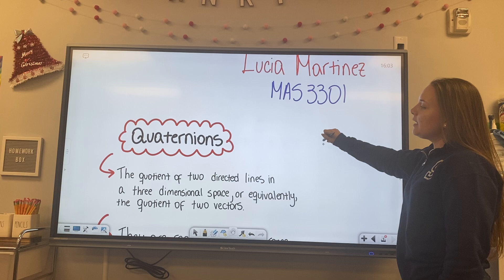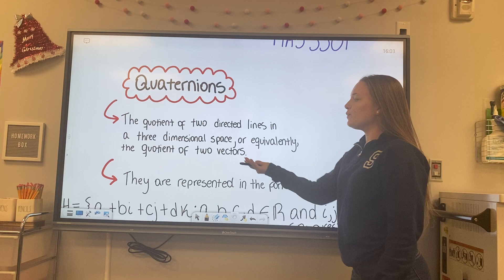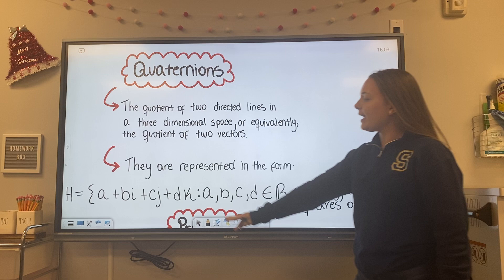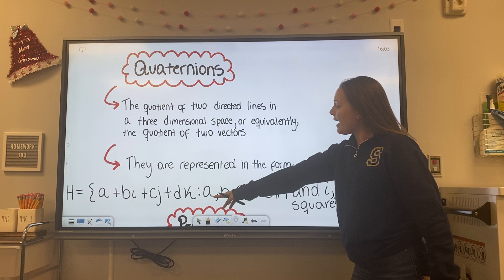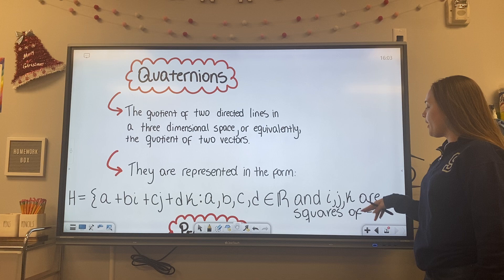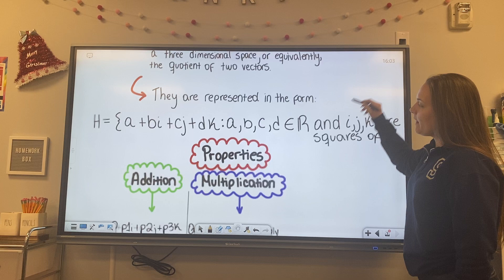So first of all, what are Quaternions? Quaternions are the quotient of two directed lines in a three-dimensional space or equivalently, the quotient of two vectors. They are represented in the form H equals the set of A plus BI plus CJ plus DK where A, B, C, and D belong to real numbers and I, J, K are squares of negative one.